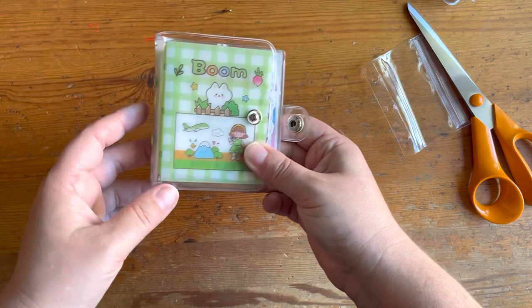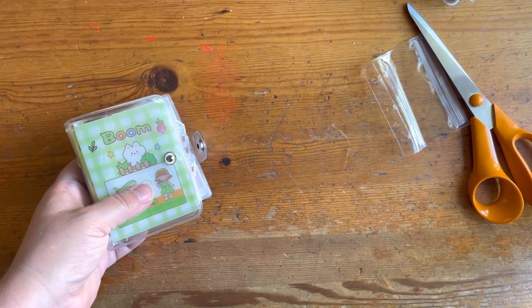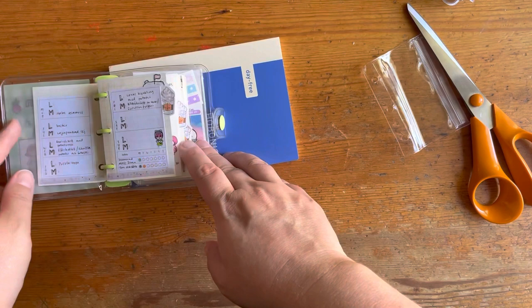This is my Hobonichi day free and as you can see, the binder itself is half the size and the papers are even smaller. So I guess they are like an A8 or something in size, I don't know.